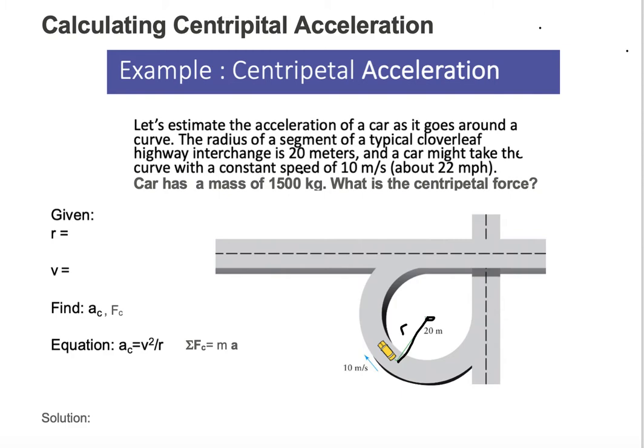A car might take the curve with a constant speed of 10 meters per second. They're already telling you the speed is 10 meters per second, and it's always tangent to the curve. That would be our velocity because I already drew the direction of what it's going in, and 10 meters per second is the quantity.